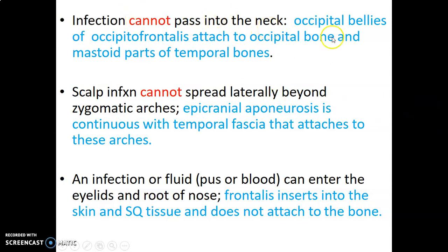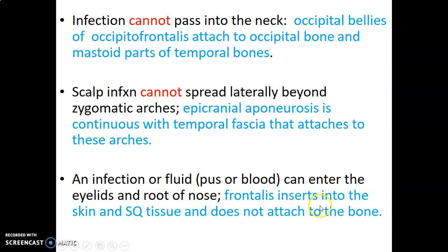Infection can spread intracranially via the emissary veins, but cannot spread into the neck because the occipital belly of the occipitofrontalis inserts onto the occipital bone and mastoid of the temporal bone. Infection cannot spread laterally beyond the zygomatic arch because the aponeurosis is continuous with the temporal fascia and attaches there. However, pus or fluid can enter the eyelids and root of the nose because the frontalis attaches to skin and subcutaneous tissue around the eyelid — not to bone.